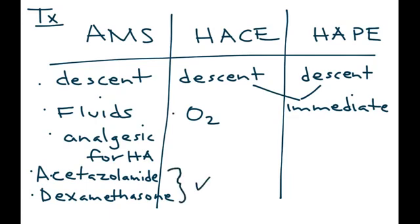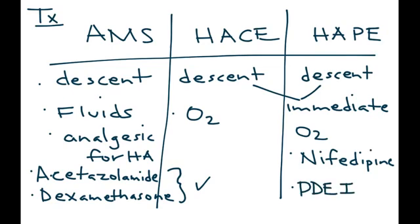In addition to going down the mountain, oxygen is also helpful, as are acetazolamide and dexamethasone for HACE. For HAPE, which is essentially pulmonary edema, oxygen helps, but you also want to give medications to reduce the pulmonary edema. The two most commonly used are nifedipine and a phosphodiesterase inhibitor known as sildenafil. Another phosphodiesterase inhibitor that can be used is tadalafil.